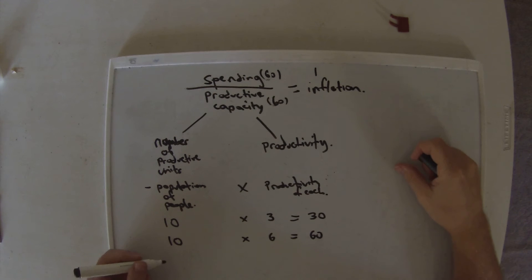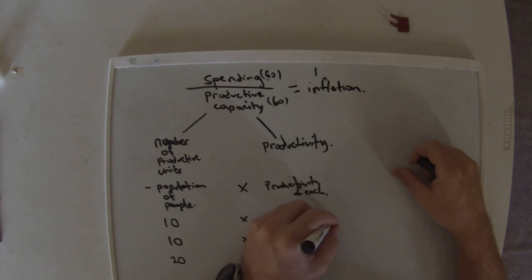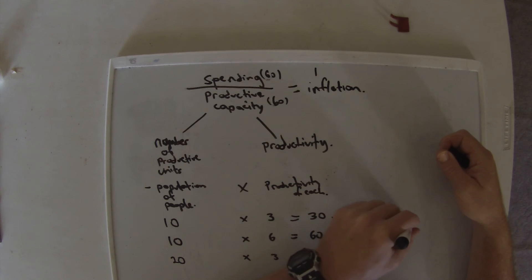Now what can happen is another way of getting double the spending is have 20 population but no increase in productivity. That also equals 60, but this one here is an increase in productivity which means it's an increase in wealth.